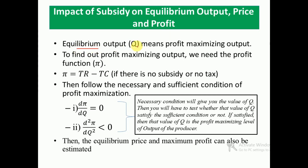Equilibrium output means profit maximizing output, and to find the profit maximizing output we need the profit function. The profit function is pi equal to total revenue minus total cost, when there is no subsidy or no tax. The necessary condition of profit maximization is dpi by dq equal to zero — we differentiate the profit function with respect to q. The sufficient condition is d squared pi by dq squared less than zero, meaning the second order differentiation must be negative.